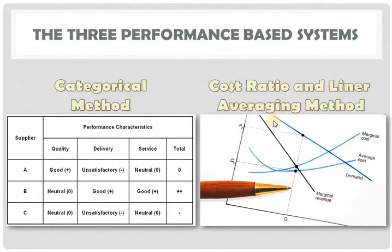The advantages of using the cost ratio analysis is that the company's supply chain expenses are cost-based and it generates savings even on a minimum percentage. On the other hand, the expenses associated with implementing this method may outweigh its advantages as it requires greater data analysis. Another factor is that it does not take into account other aspects of the supplier's performance. The cost ratio method deals with the cost of delivery, quality, and even the services given by suppliers.